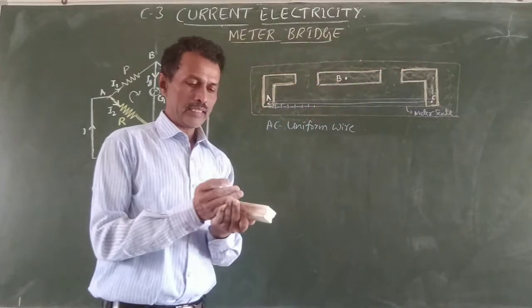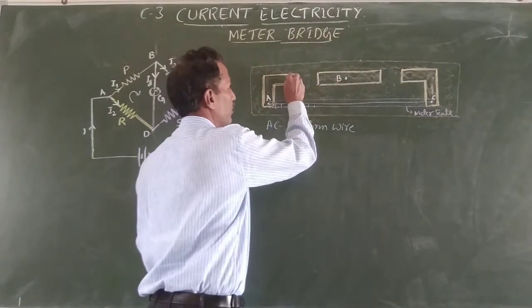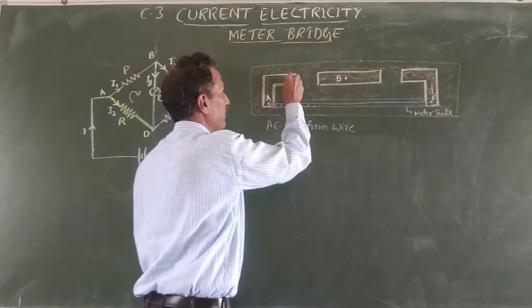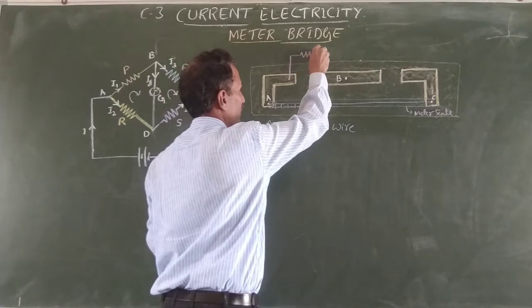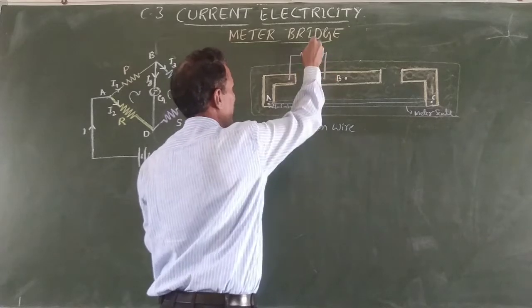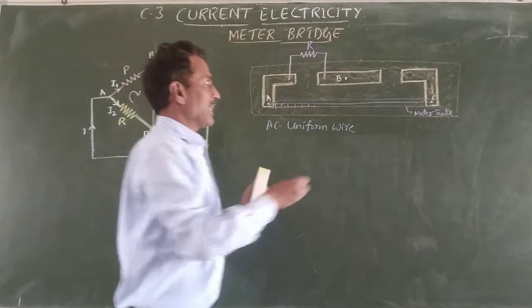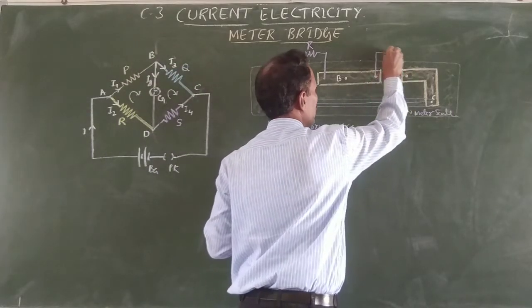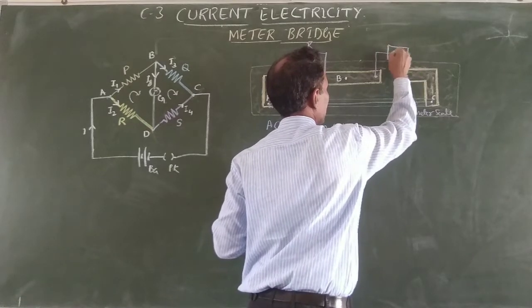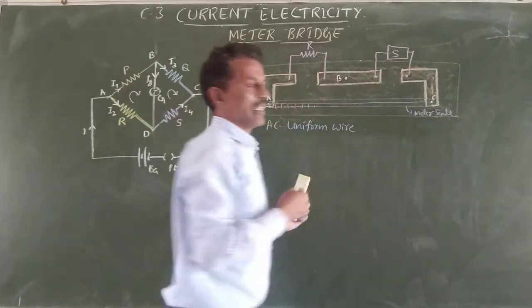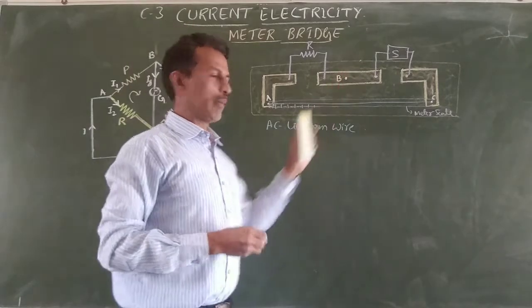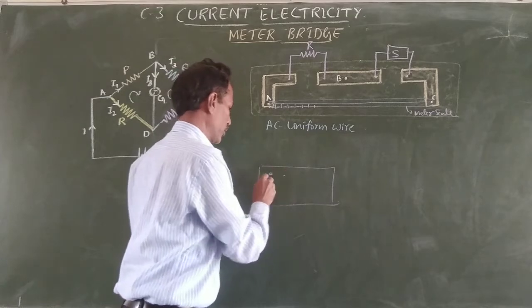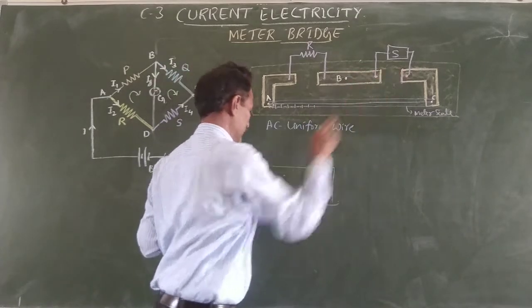The unknown resistance, which is to be determined, is connected to the left gap. The standard resistance box S is connected to the right gap. This is the key connection.